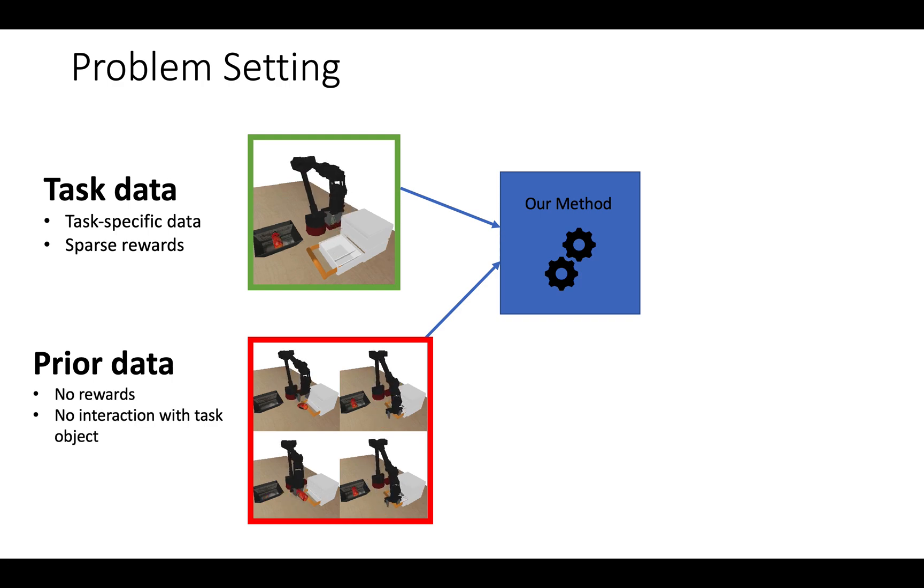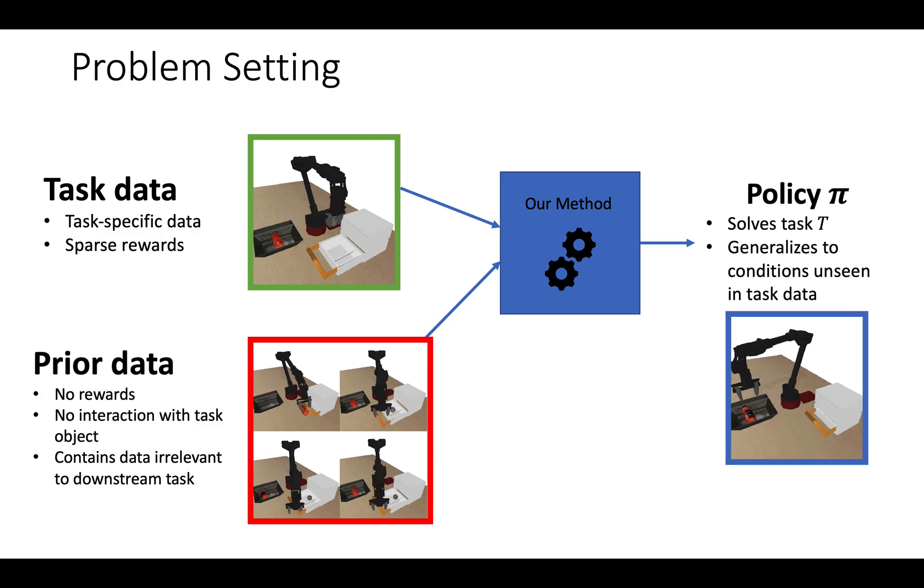This dataset need not contain any interaction with the task object of interest, and not all of this data needs to be useful for the downstream task. Our goal is to utilize both prior data and task-specific data to learn a policy that can execute the task from new initial conditions that were unseen in the task data.